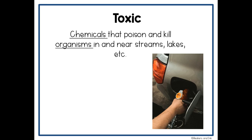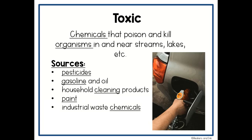Toxic chemicals are another pollutant source. Chemicals that poison and kill organisms in and near streams and lakes are considered toxic. Sources include pesticides, gasoline and oil leaking from cars, household cleaning products, paint — especially if it contains lead — and industrial waste chemicals. These can poison and kill organisms as well as poison humans, so it's very important that we consider where we're disposing of these chemicals.